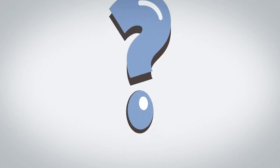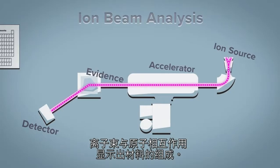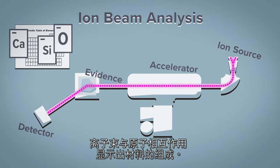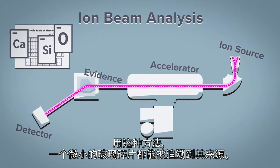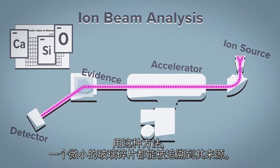How? Ion beams interact with atoms to show the composition of material. With this method, a tiny shard of glass can be traced back to its source.